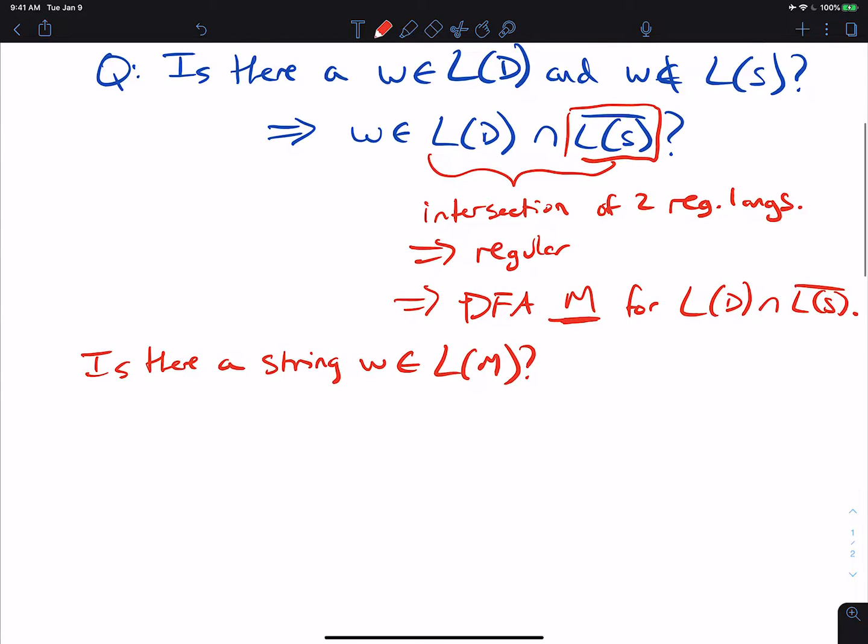Which is exactly the same question as what we just asked. Well, then what we're really asking here is, does M accept anything? And if that's true, then that means there is a string in the language of M, which means that D's language is not a subset of L of S's.